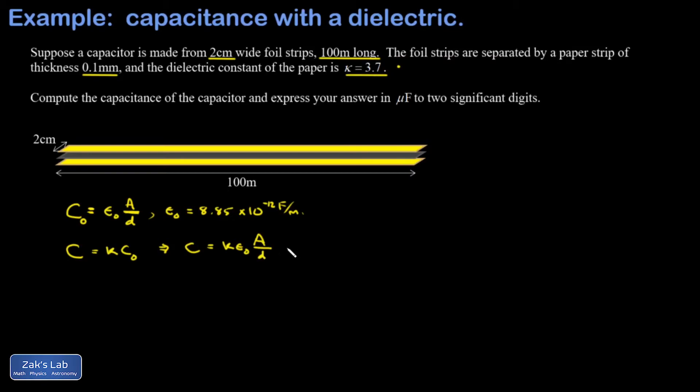So there's not much left to this problem. We just plug everything into the formula. The area of each plate, it's a simple rectangle. The width is 2 centimeters, so that's 0.02 meters. Length, 100 meters. The plate separation is a tenth of a millimeter, so I have to shift three decimal places to get meters. So that's 0.0001 meters. And I get 6.55 times 10 to the negative 7 farads.